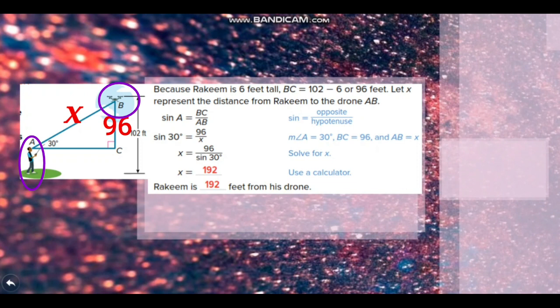So what relation relates the angle 30 with 96 and the hypotenuse x? 96 feet is the opposite side of 30 degrees and x is the hypotenuse. So the relation is the sin function.